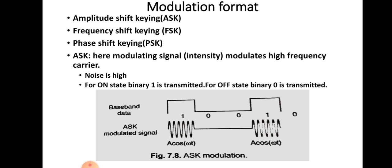Next is the modulation part. At the transmitter side, there are different modulation schemes used. The modulation formats used are amplitude shift keying (ASK), frequency shift keying (FSK), and phase shift keying (PSK). ASK means on-off keying — the intensity of the modulated signal is used to modulate the carrier signal, and noise is very high in this case. In the on-state, binary 1 is transmitted; for the off-state, binary 0 is transmitted. For binary 1, the carrier wave is transmitted; for 0, no carrier wave is transmitted. This is the basic ASK method.